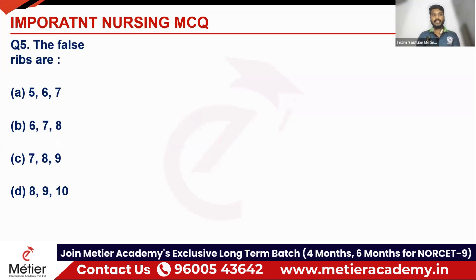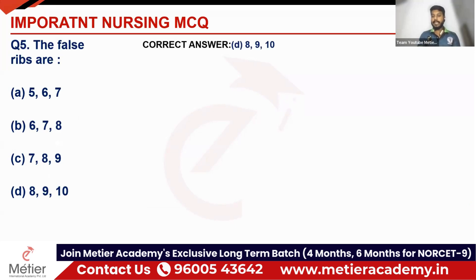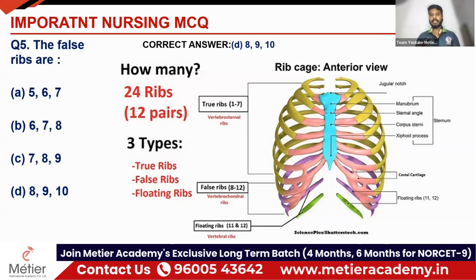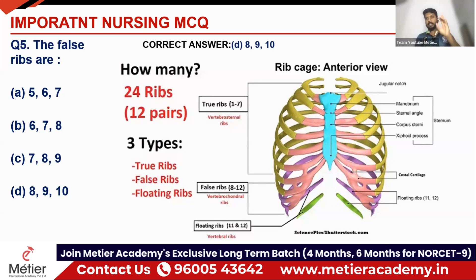Last question: the false ribs are which numbers — 5-6-7, 6-7-8, 7-8-9, or 8-9-9-10? The correct answer is option D, ribs 8-9-10. We have 24 ribs in total — 12 pairs, right and left. From ribs 1 to 7, those are called true ribs, also known as vertebrosternal ribs. From ribs 8 to 12, those are called false ribs. Among them, ribs 11 and 12 are particularly called floating ribs. So we have three types: true, false, and floating.